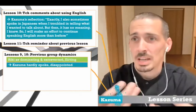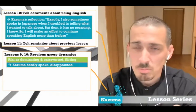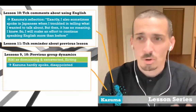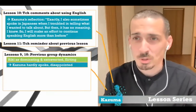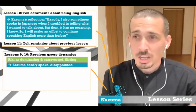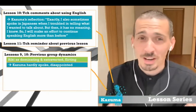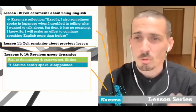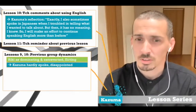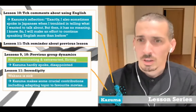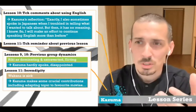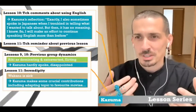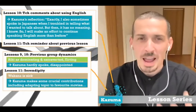The group dynamics and relationships also seemed to play an important role. Ricky had been very talkative in previous lessons and seemed to be flirting with Wakana — all his attention was focused on her, and he physically turned towards her. Kazuma was unfortunately excluded and reflected on disappointment in not being able to contribute more. However, in lesson 11, Wakana was quite obviously sick — she was wearing a mask, her eyes were glazed — so there was an almost serendipitous opportunity for Kazuma to act more positively.